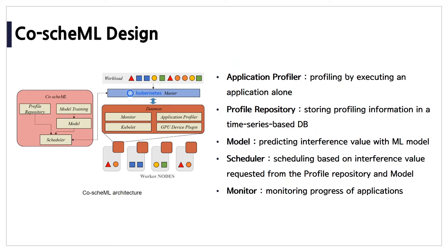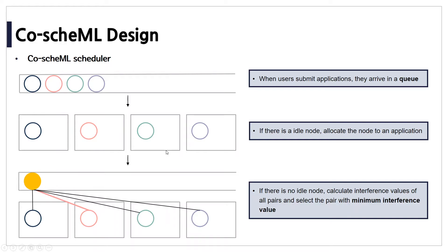Now I will go into the details of our CoScheduleML architecture. The application profiler executes each application alone and profiles it to collect metrics. The profile repository labels profiling information with an application name and input data, and the information is stored in a time-series-based database in InfluxDB. The model predicts interference values using the ML model. The scheduler requests interference values from the interference model and selects the pair with the minimum value. A monitor tracks the progress of applications.